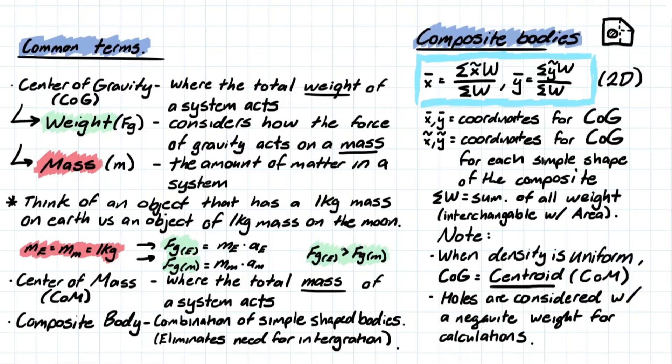This leads us into our next point, where we're talking about the center of mass, which is where the total mass of the system acts. And then the composite body is what we already talked about before. It's just a combination of simple shapes that create a system that we can solve a centroid for. And the cool thing about composite bodies is that we don't need to integrate using this formula because we have a finite number of shapes that we're working with.